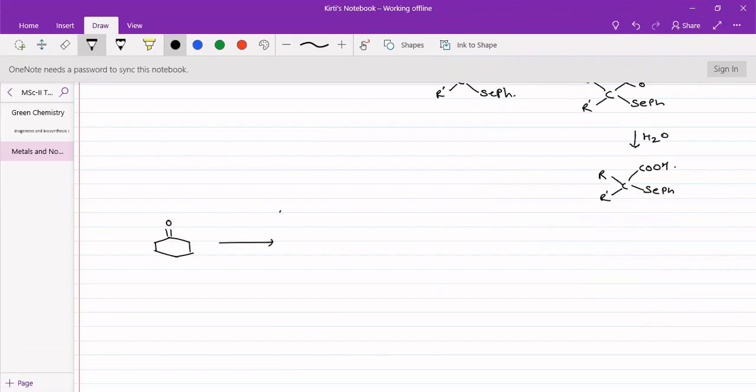An example for this can be cyclohexanone when reacted with phenyl selenol in presence of Lewis acid will give diselenide. This selenoacetal with n-butyl lithium and carbon dioxide will be giving us carboxylate.